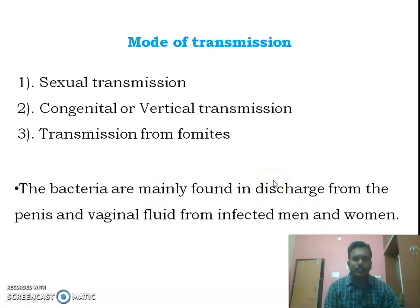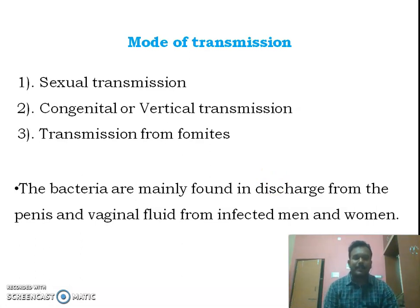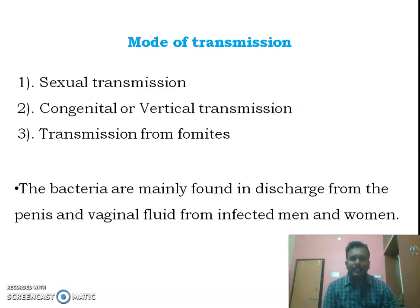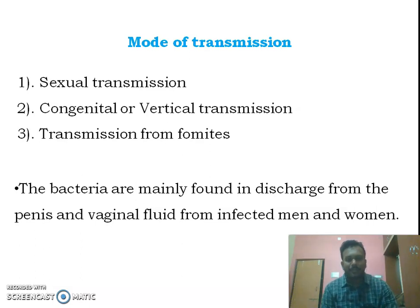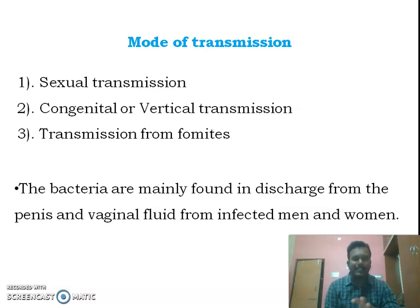Coming to the modes of transmission, gonorrhea will transmit from one person to another by three routes. The most common route is sexual transmission. The second is congenital or vertical transmission, also known as mother-to-fetal transmission. Transmission from fomites is a very rare route, meaning very rarely — less than one percent of cases — will transmit through fomites.